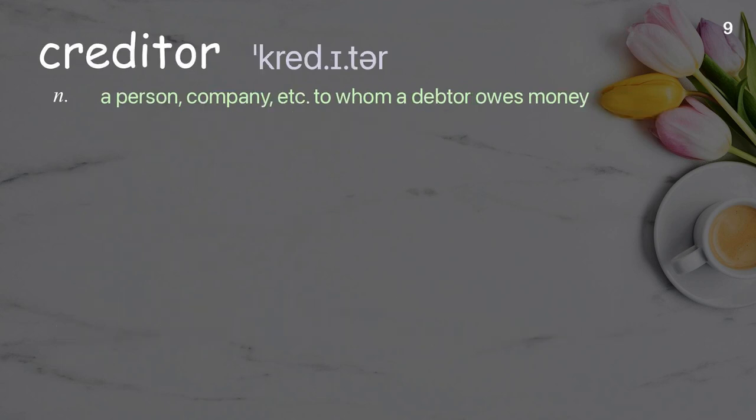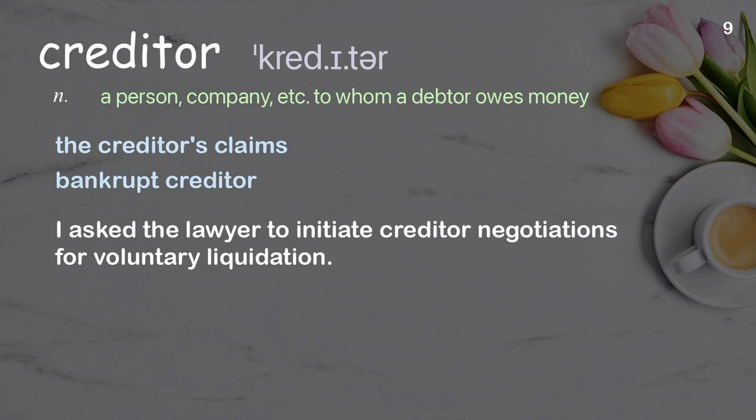Creditor: A person, company, etc. to whom a debtor owes money. Examples: The creditor's claims. Bankrupt creditor. I asked the lawyer to initiate creditor negotiations for voluntary liquidation.